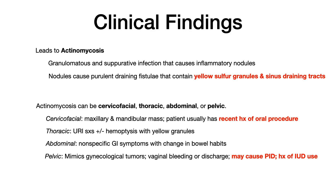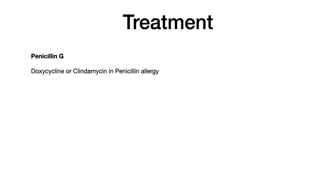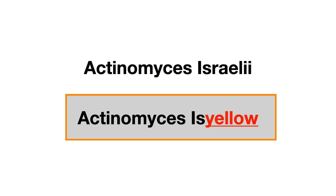As far as treatment goes, the medication of choice is high-dose penicillin G. In somebody with a penicillin allergy, you can use doxycycline, clindamycin, or erythromycin. A helpful mnemonic: associate Actinomyces israelii with yellow — so instead of 'israelii,' think 'is yellow.' Actinomyces is yellow. That's everything you need to know about Actinomyces israelii.